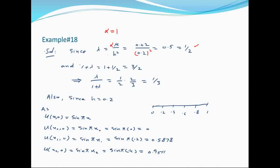दो values calculate करते हैं: (1 + lambda) = 3/2 और lambda / (1 + lambda) = (1/2) / (3/2) = 1/3 आती है।